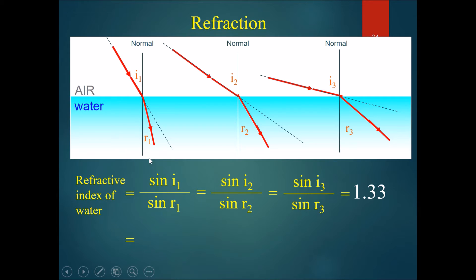If we use Snell's law, sine i1 divided by sine r1 equals 1.33. However, if we change the angle, sine i2 divided by sine r2 would equal the same number. Similarly, sine i3 divided by sine r3 would once again be the same number. It is a constant throughout.